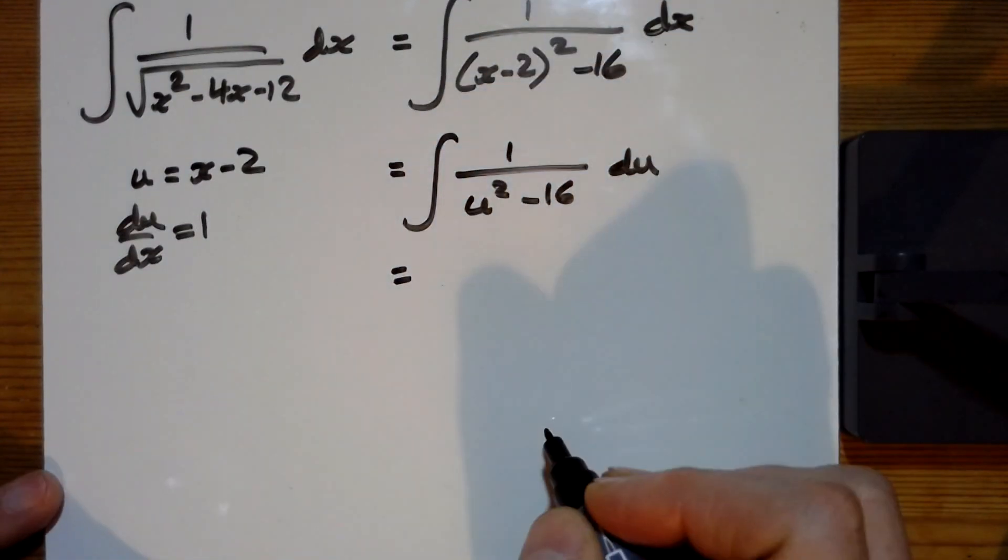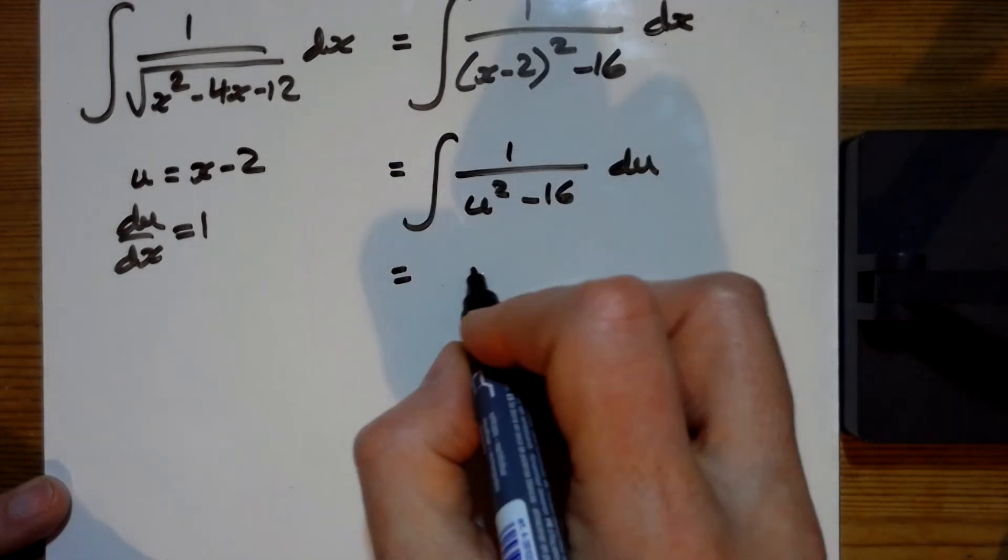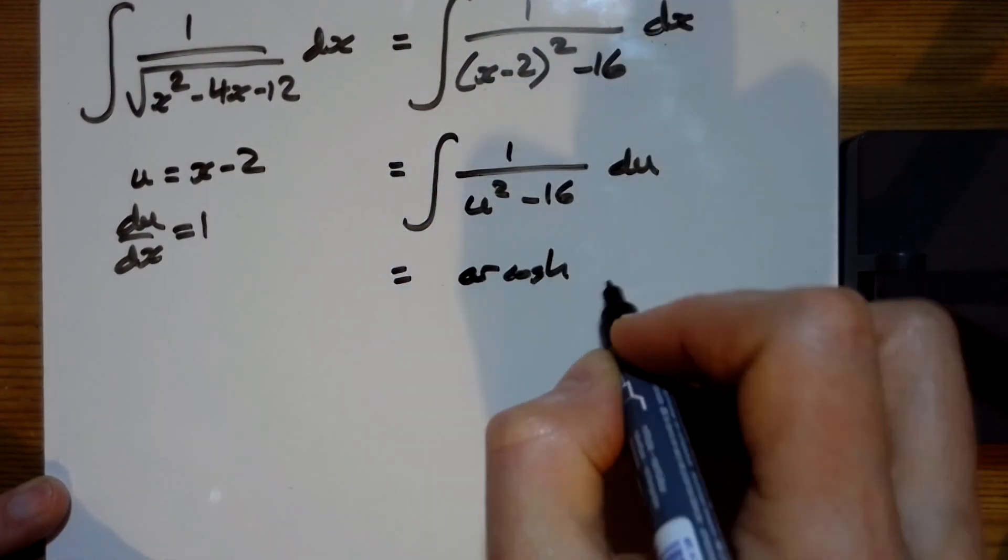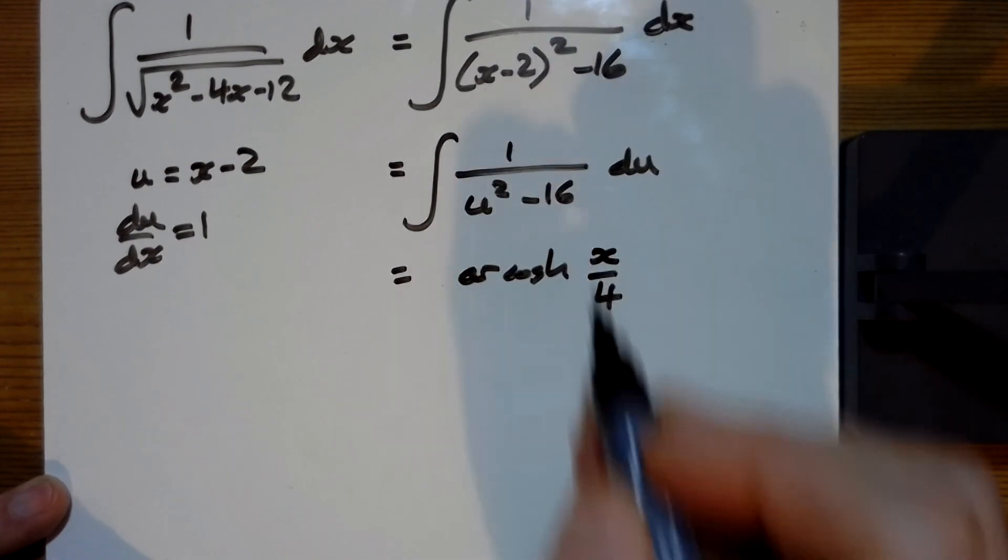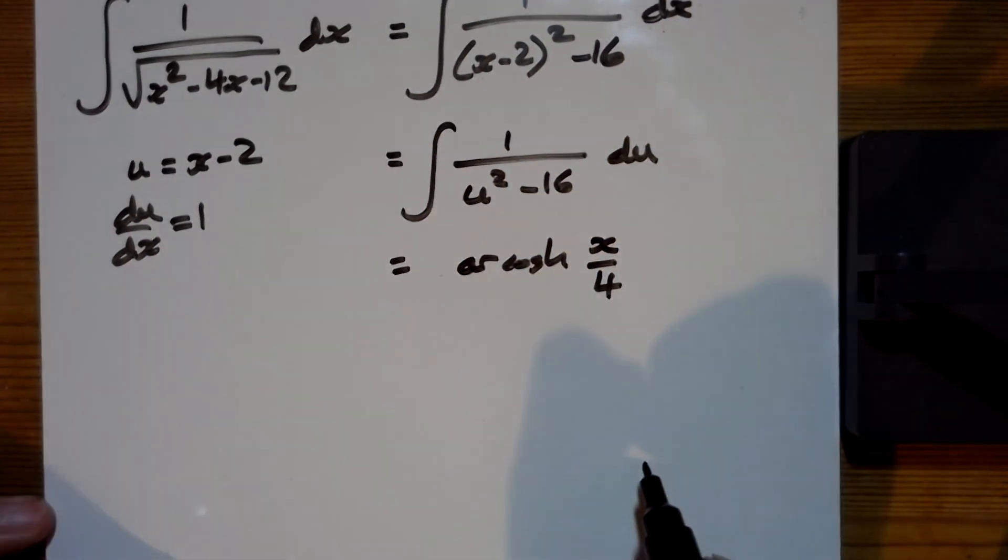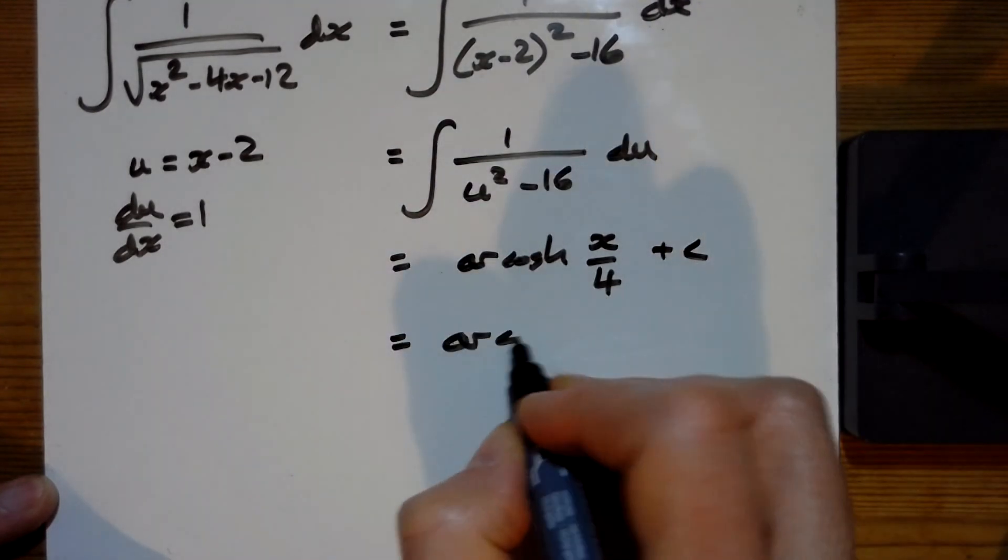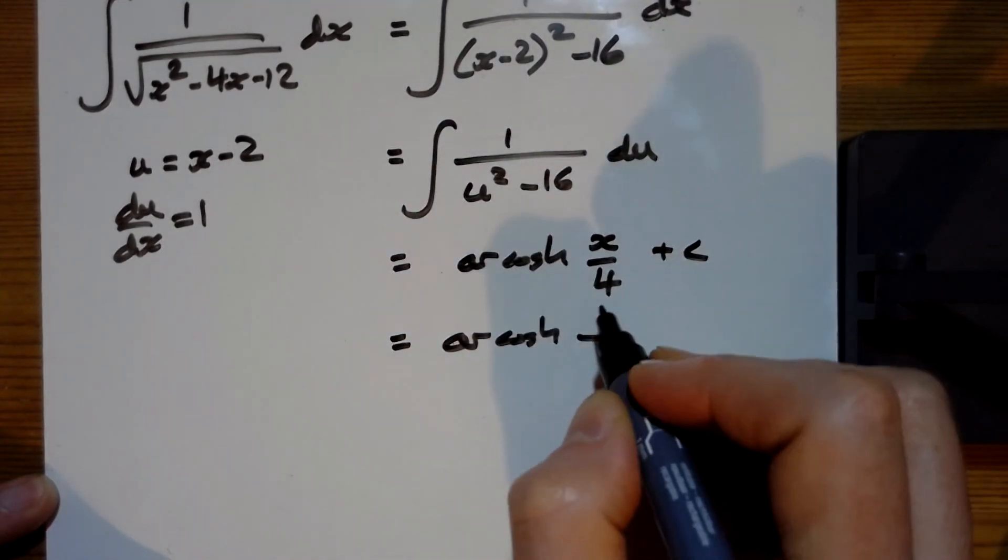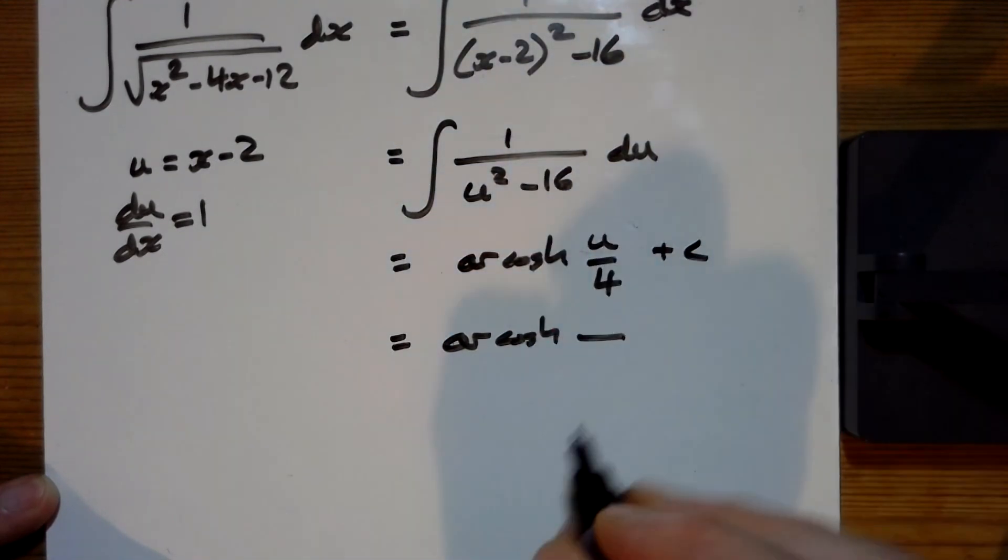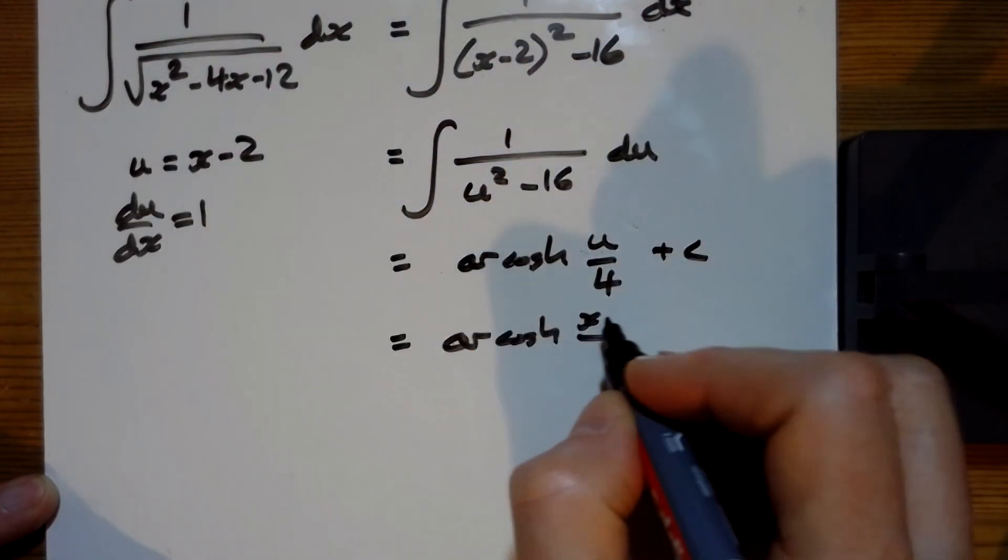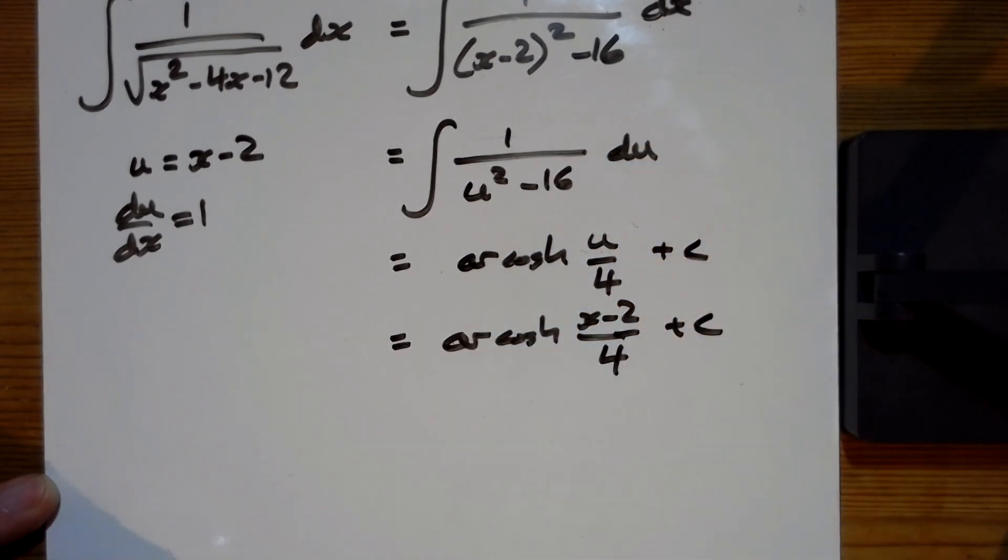So u squared take away 16 is a pretty quick one. The takeaway one is the arcosh, so we've got the arcosh of u over 4, now the square root of 16 being 4, plus c. Then just stick the u back in there, so we've got arcosh of x take away 2 over 4 plus c.